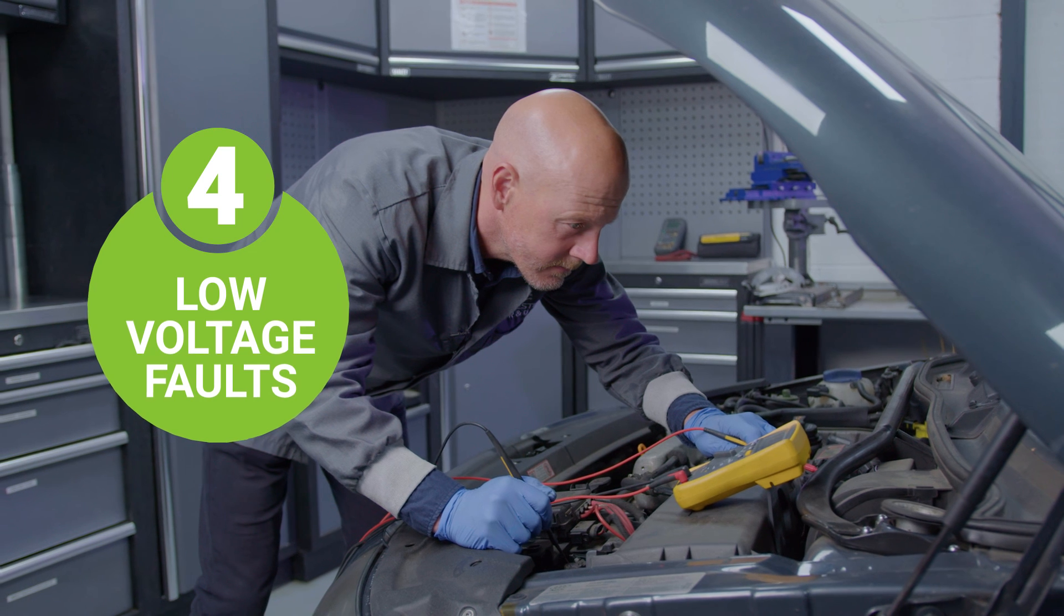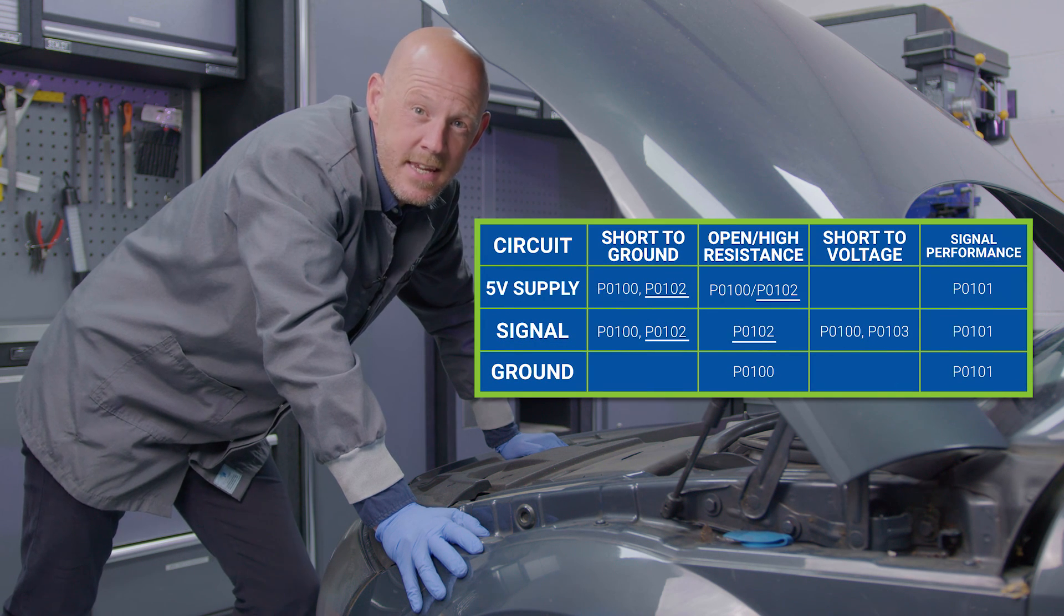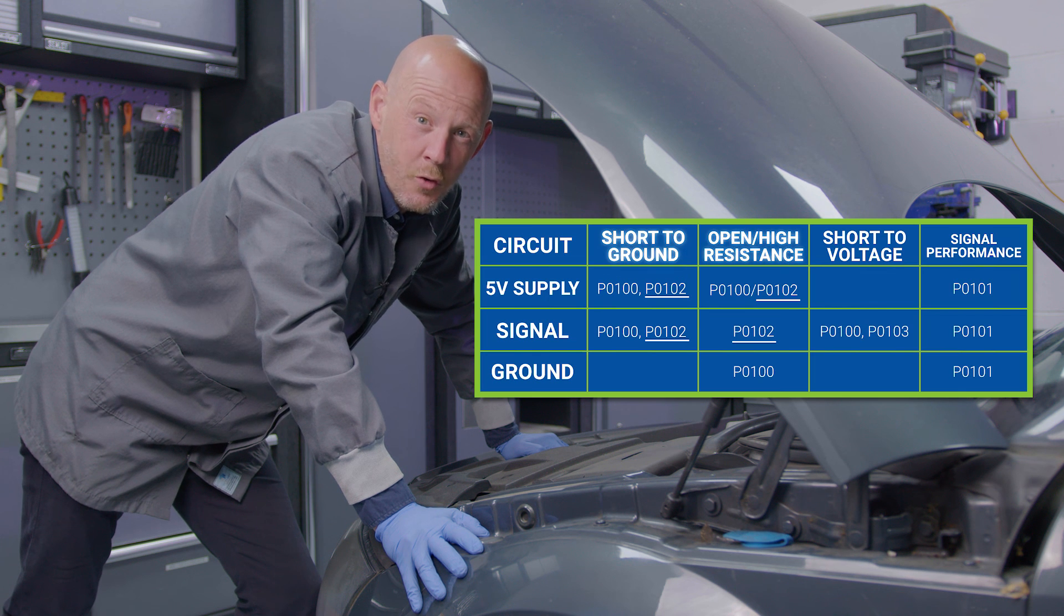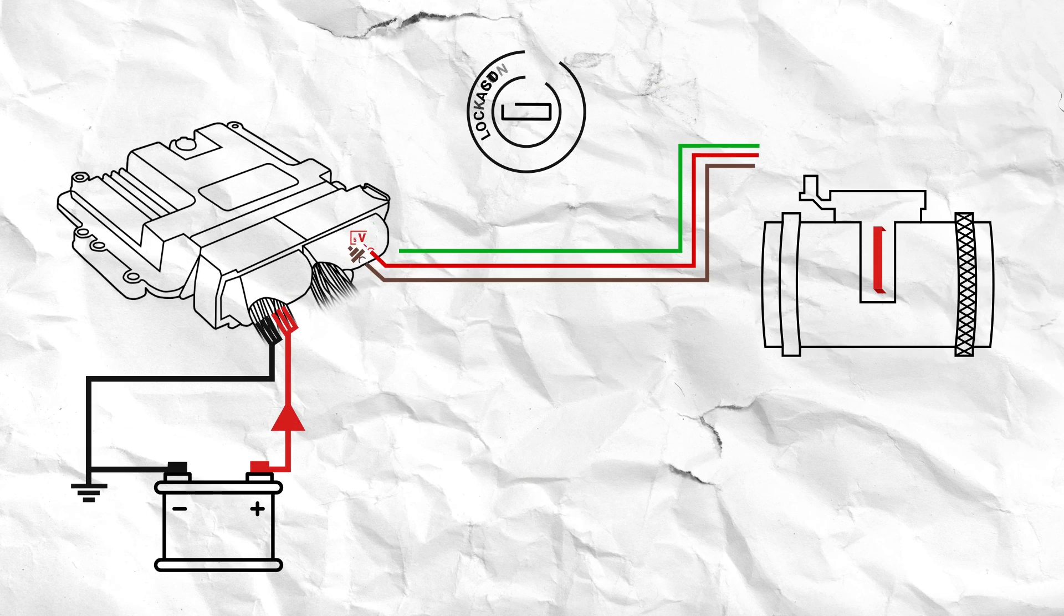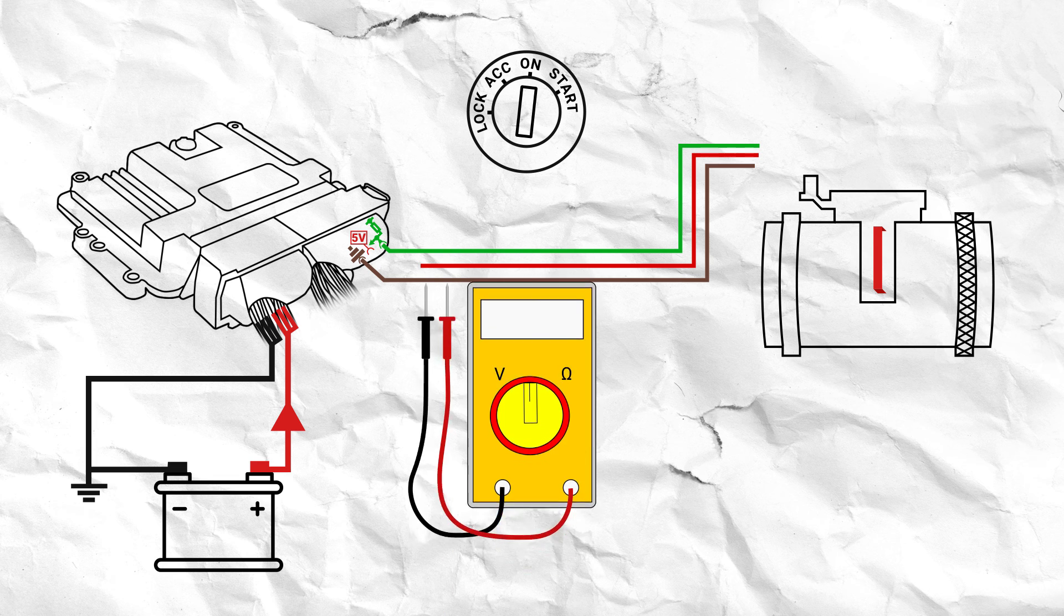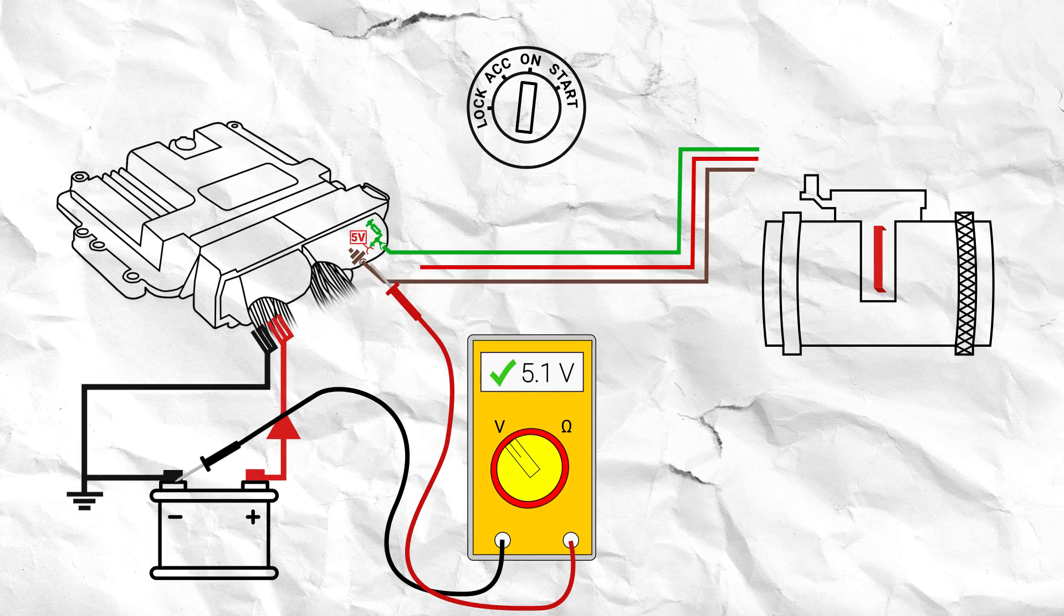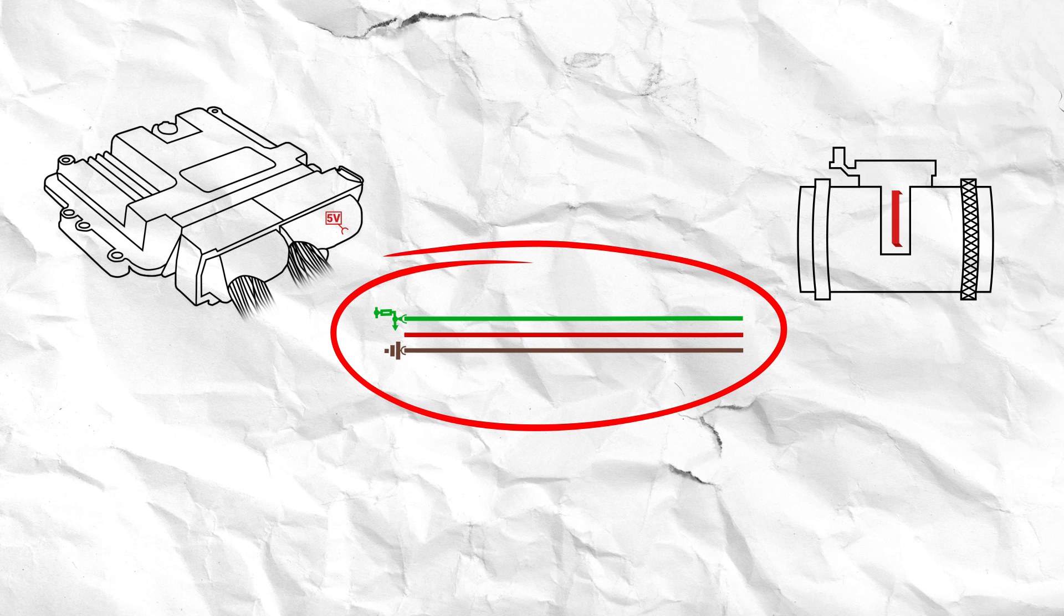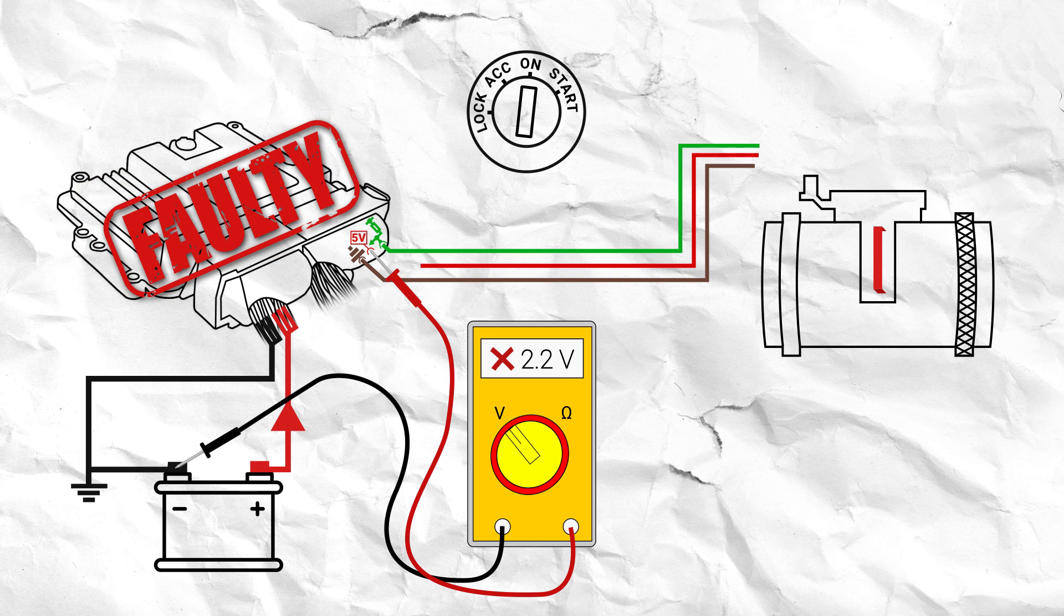If you have a P0102 fault code and experienced a reading lower than the expected range whilst testing at the ECU, then you likely have a short to ground or high resistance in either the wiring or ECU. To test where in the circuit the fault lies, again remove the terminal of the affected wire from the ECU connector. Plug it back in, turn the ignition on and retest at the ECU. If the reading is now good, then the short is within the loom from the ECU to the sensor and will need to be repaired. However, if the reading is still low, then there is an internal fault within the ECU which will need to be rebuilt.